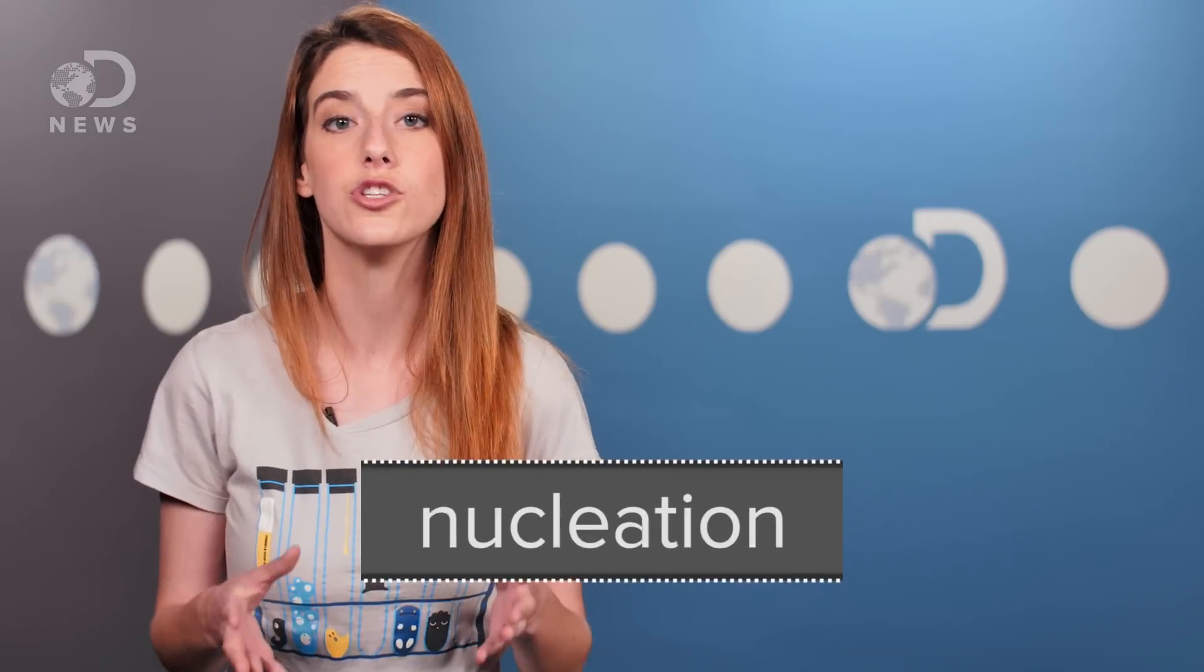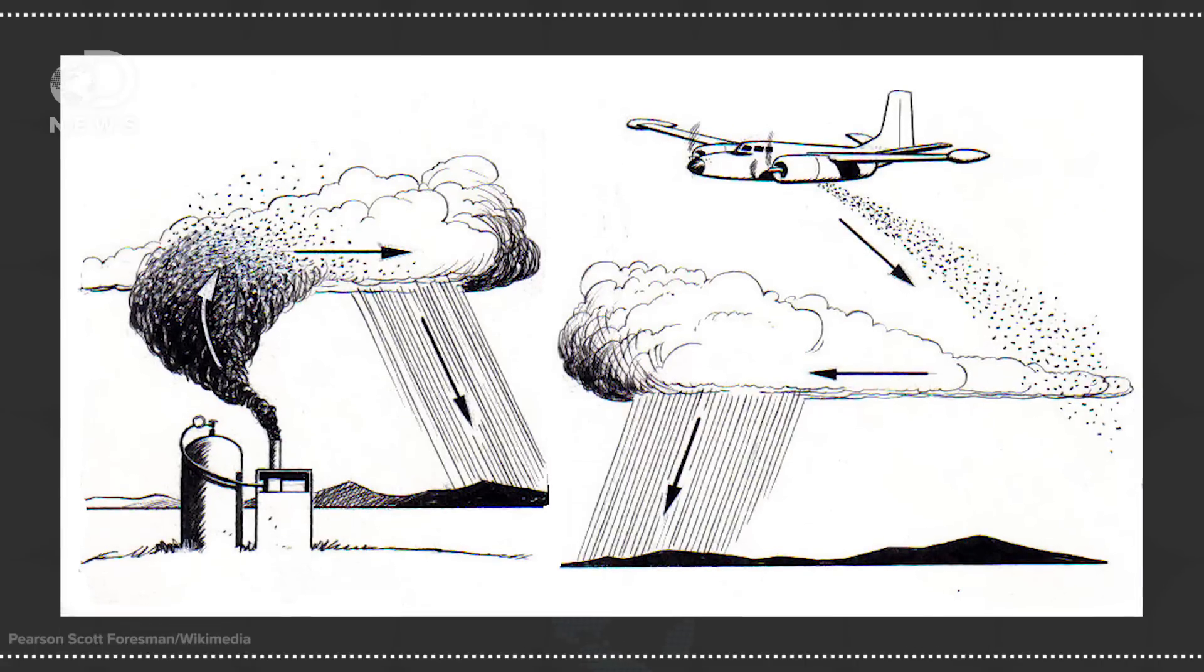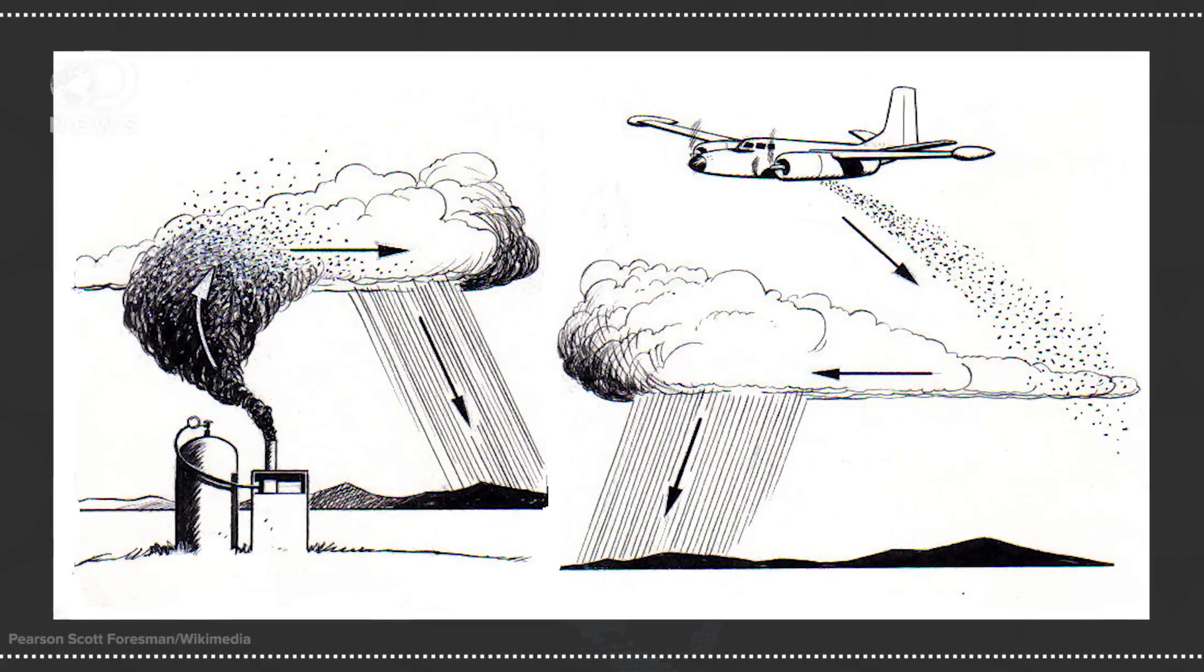Cloud seeding produces nucleation, when water particles attach to other small particles and condense. Basically, it makes water vapor form clumps into a cloud. If it gets heavy enough, it falls to the ground as rain.